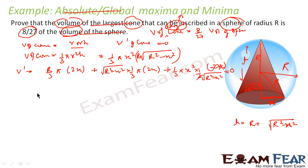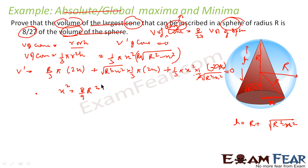Solving this equation — which is a bit lengthy but you can work through it — you get x² = 8/9 R². You can also find V double dash and verify it is less than zero, confirming this is indeed the maximum.